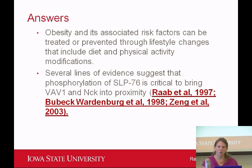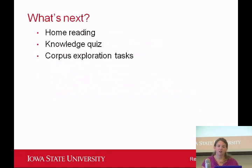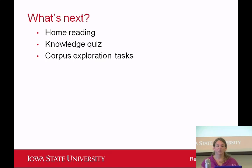Your next steps are to look at the home readings — there's a reading over move one for you to review, which will help consolidate the information we've talked about today and clarify any confusing steps. Then there's a knowledge quiz to check your understanding. Finally, there's a corpus exploration task for you to try at home or in the lab — to see how what I presented today translates into your own narrow subfield: what order the steps are introduced and how they interact. In our next lecture, we'll discuss move two of the introduction section.